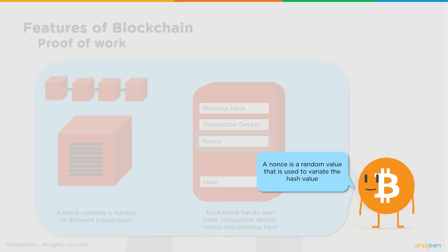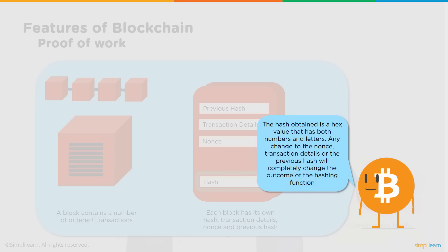The value of the nonce can be changed, and every time it is changed it takes huge computational power for the miner to generate the hash again. That's why miners need powerful hardware — to generate the hash and guess the nonce in a stipulated time to earn the reward. The hash obtained is a hex value containing both numbers and letters. Any change to the nonce, transaction details, or previous hash completely changes the hashing output. This means that if a hacker tries to alter a single block, they must change the hash of all subsequent blocks, requiring enormous computational power — making it literally impossible to hack a blockchain.